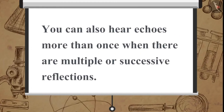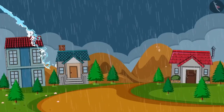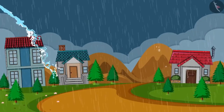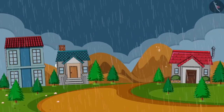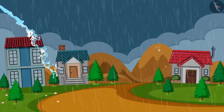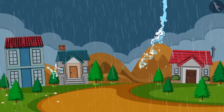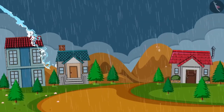You can also hear echoes more than once when there are multiple or successive reflections. Due to this reason, rolling of thunder sound also occurs. The thundering sound undergoes successive reflections from multiple reflecting surfaces like the clouds and the land.